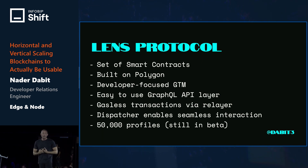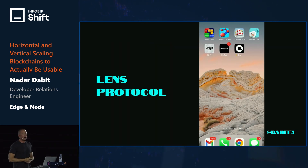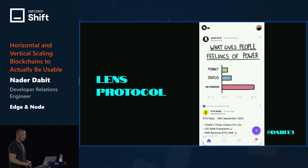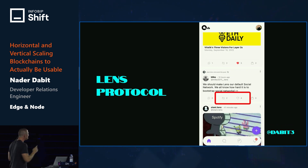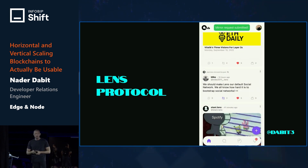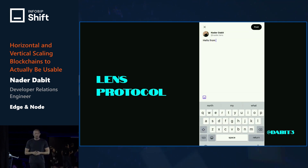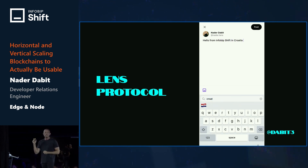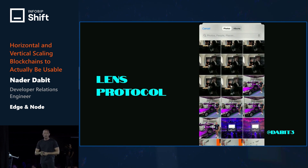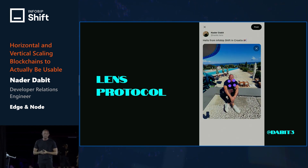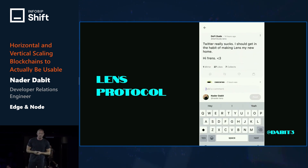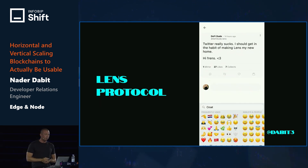Lens is still in closed beta but already has 50,000 members signed up. When you open the app, it looks and feels just like a traditional application — you can like something, retweet (called mirroring), post images, do whatever you want. Everything looks and feels like any traditional app. But unlike other blockchain applications where you have all that signing to deal with, here you just click post and everything just works and feels really nice.